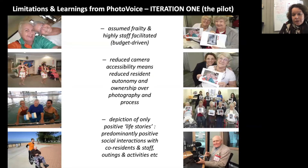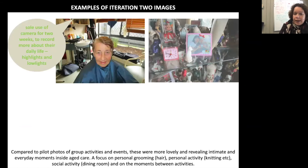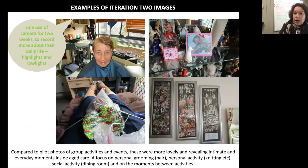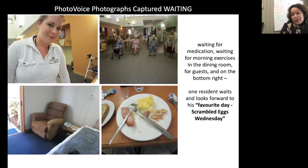In the second iteration, where we had more time and structured the task with older people in aged care, we got much deeper, richer images. We asked them to record their life for two weeks with highlights and low lights, and also to take a photograph every hour while they're awake. Some of my favourite photographs are here — bottom right is Patrick's favourite day of the week: scrambled eggs Wednesday. The photograph's a little blurry, which represents his ability to take photographs, but it really captures that daily life ritual and the experience of aged care.